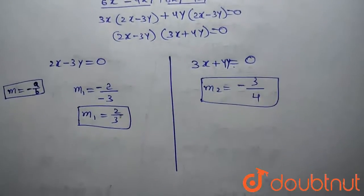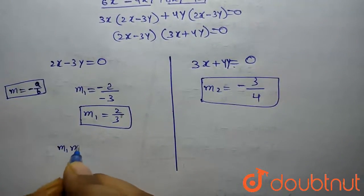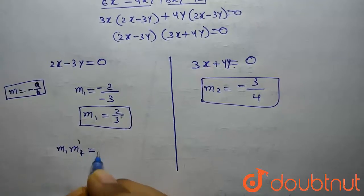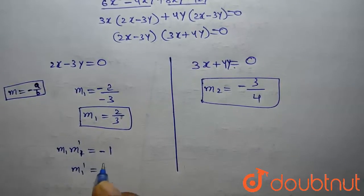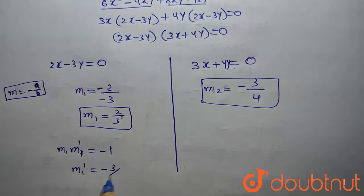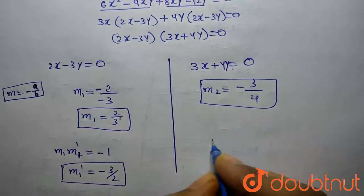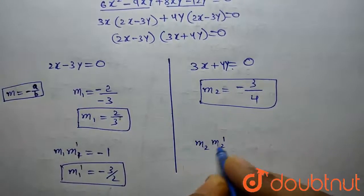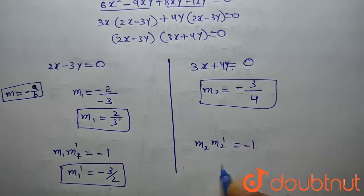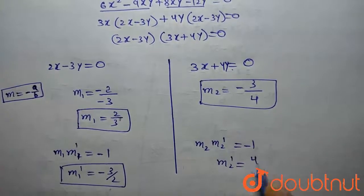To find the perpendicular slopes, we use m₁ × m₁' equals minus 1, giving m₁' equals minus 3/2. Similarly, m₂ × m₂' equals minus 1, giving m₂' equals 4/3.